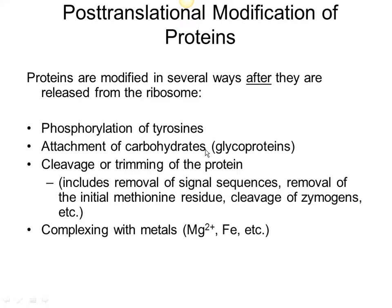Another post-translational modification you're probably familiar with is the attachment of carbohydrates, which requires an enzyme called glycosyl transferase — glycosyl referring to sugar or carbohydrate chains, and transferase meaning attaching something to. So attaching a carbohydrate to a protein creates a glycoprotein, and that usually happens in the rough ER. Additional cleavage or trimming of the protein can include removal of signal sequences, and also trimming off the first methionine amino acid — that first residue, which is always methionine, is often trimmed off shortly after the protein is completed.